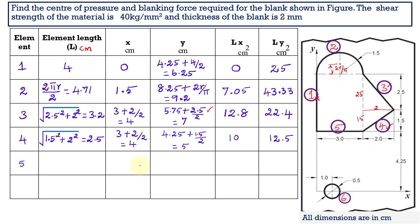For the fifth section, the horizontal line, the element length is directly 3 centimeter. The X bar value is 3 divided by 2, which equals 1.5 centimeter. The Y bar value is located at a distance of 4.25 centimeter from the X reference line, so it is taken as 4.25 centimeter. The LX and LY values are obtained by multiplying L with X and L with Y.